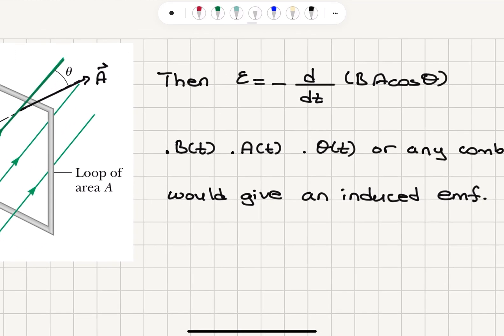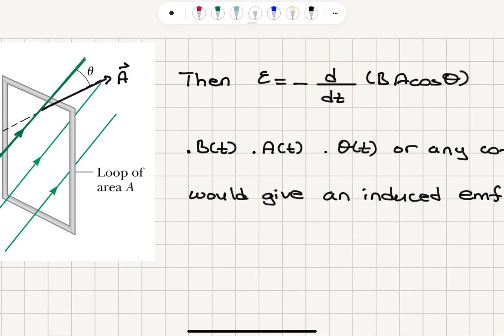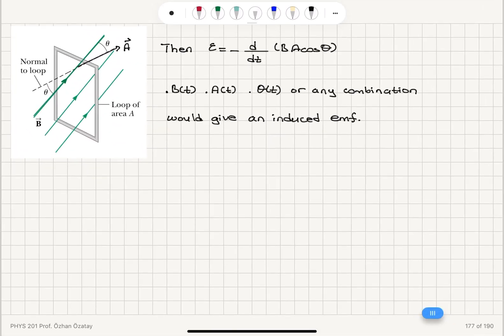Then the induced EMF will be minus the rate of change of magnetic flux BA cos(θ). Because I have a constant magnetic field and a constant area here BA cos(θ). If I start changing the magnetic field as a function of time, area as a function of time, if I shrink this loop or enlarge this loop...